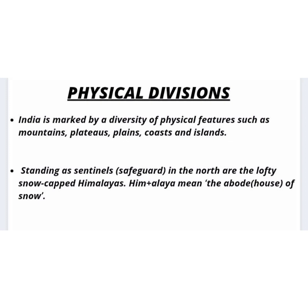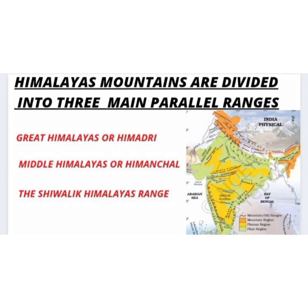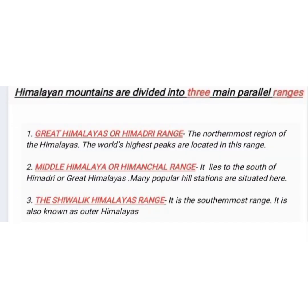'Him' plus 'alaya' means the abode or house of snow. The Himalayan mountains are divided into three main parallel ranges. First is the Great Himalayas or Himadri — the northernmost range where the world's highest peaks are located. Second is the Middle Himalaya or Himachal, which lies to the south of Himadri, and many popular hill stations are situated here, such as Manali, Kufri, Palampur, Dalhousie, Dharamshala, and Narkanda.